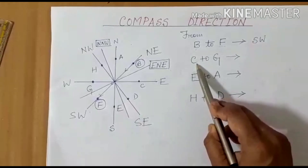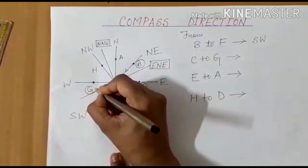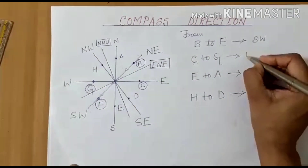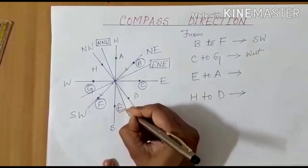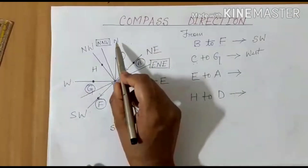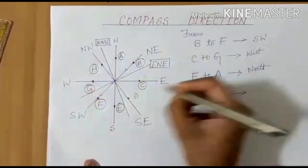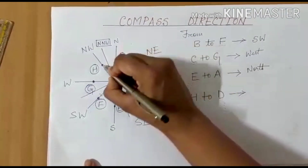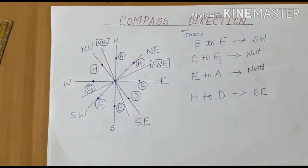Next, from E to A: here is point E and here is point A. Stationing at E and moving toward A, the direction is north. Similarly, from H to D: this is point H and this is point D. Moving from H toward D, we are moving southeast. The answer is southeast. This is how compass direction helps us find the direction from one place to another.